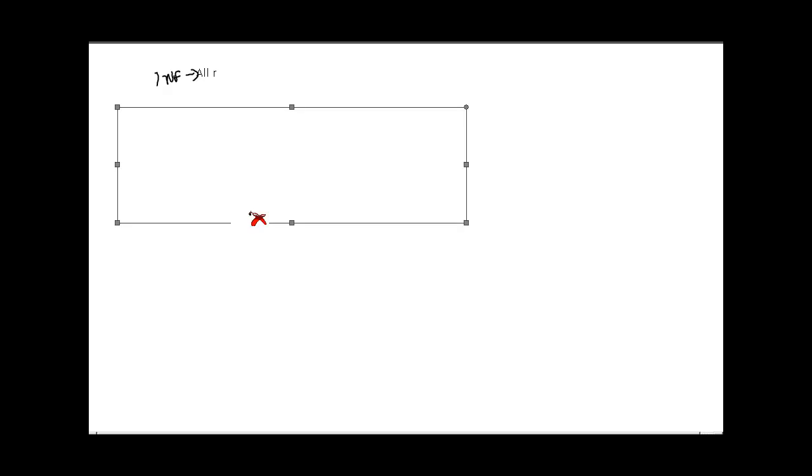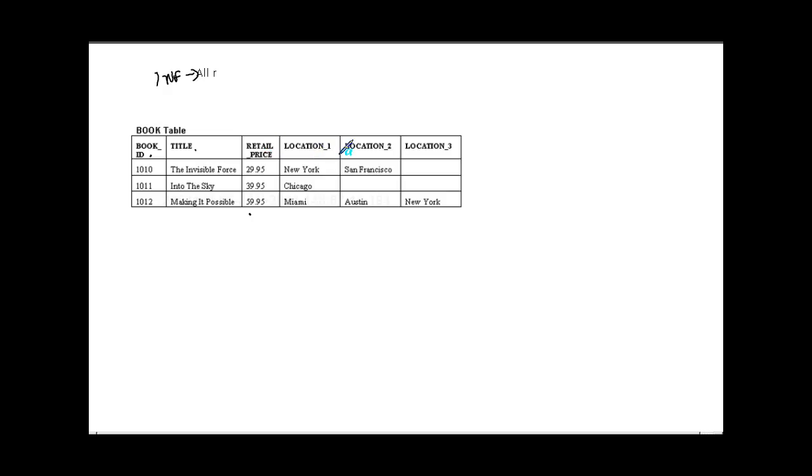Let's look at this table. We have a book table with book ID, title, price, and then location 1, location 2, location 3. We are simulating a warehouse where we store books at different places. Book number 1010 is available in New York and San Francisco with no third location. My second book is only available in Chicago, whereas my third book is available in all three locations.